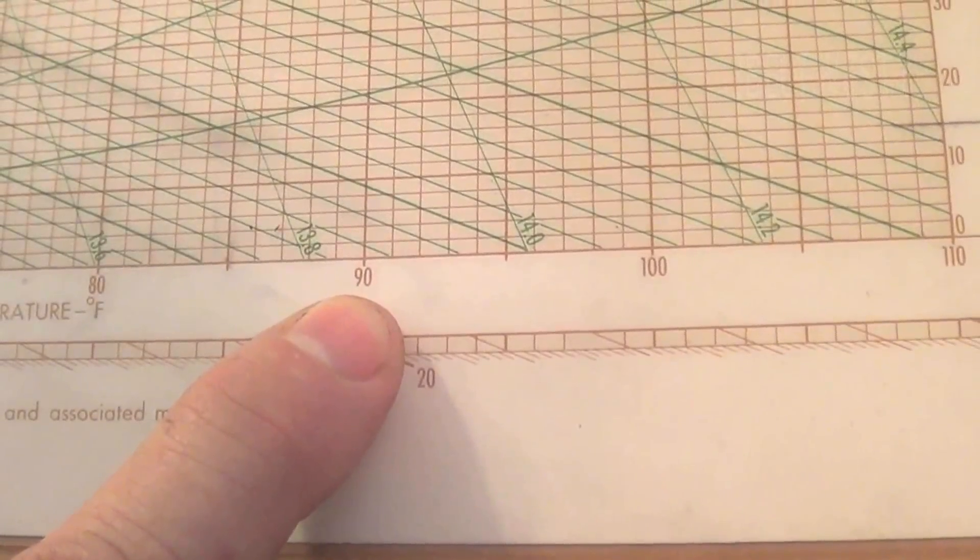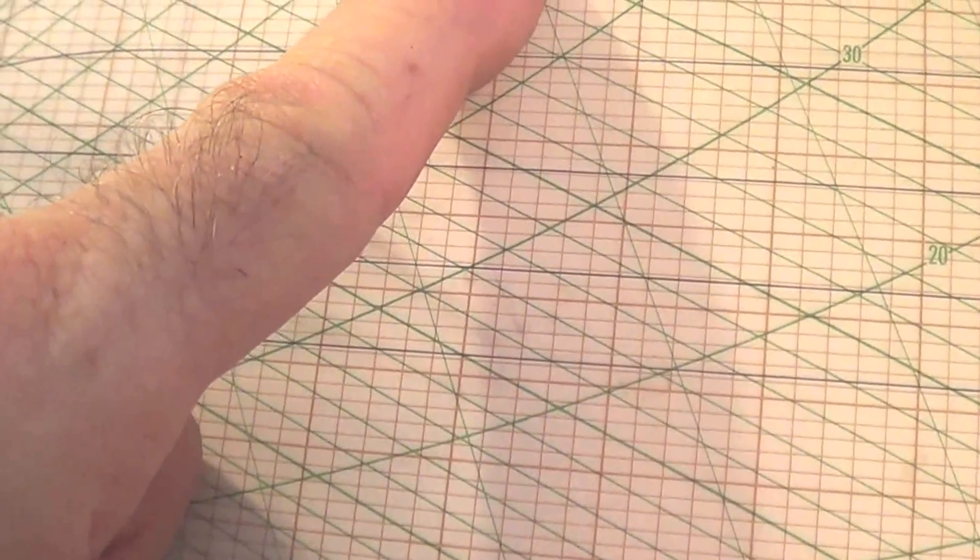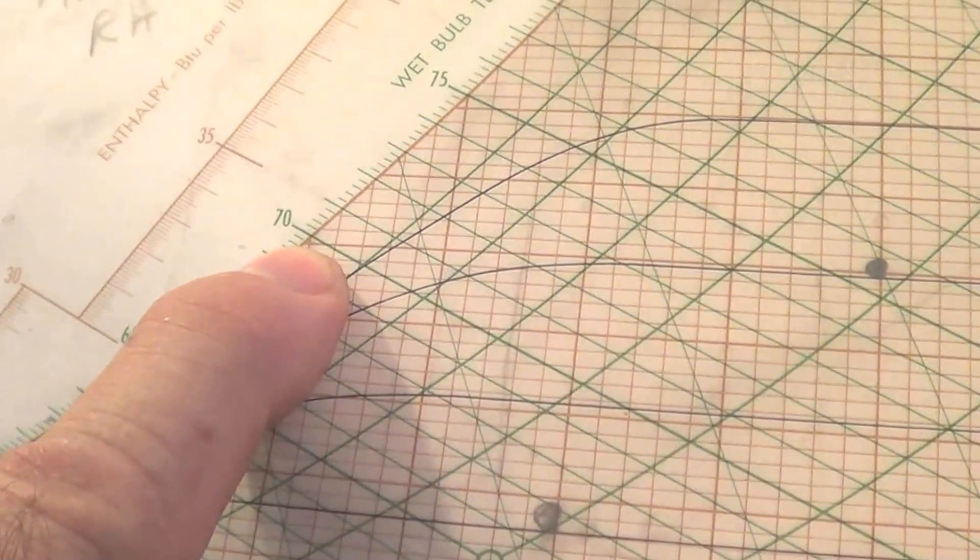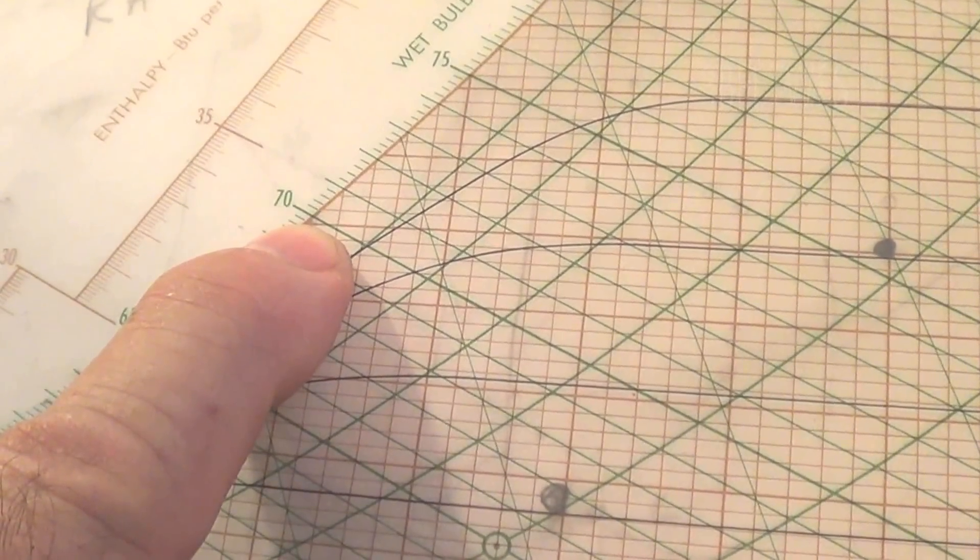90 degrees F dry bulb. If you go through here and you look at what the dew point would be, it would be 70 degrees, 20 degrees less.